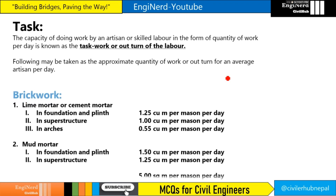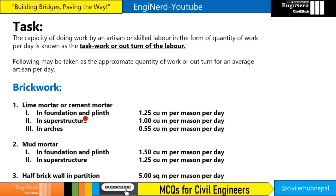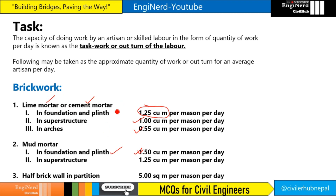For brickwork in lime mortar or cement mortar: in foundation and plinth it is 1.25 cubic meter per mason per day, in superstructure it is 1.0, and in arches it is 0.55. For mud mortar, brickwork in foundation and plinth is 1.5 — more than when using lime or cement mortar — and in superstructure it is 1.25.